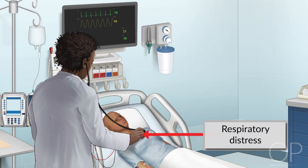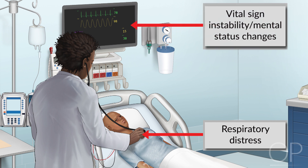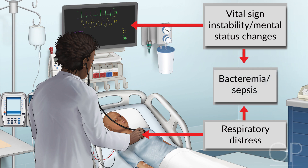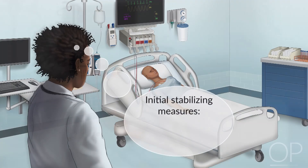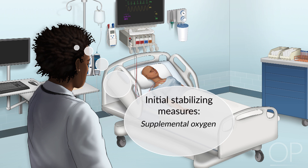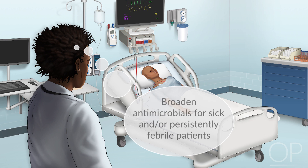Ongoing clinical assessment is important in ensuring that changes in a patient's clinical status are noted promptly. While many patients with febrile neutropenia have no localizing signs or symptoms and are managed sufficiently with empiric antibiotics, some patients may develop more concerning symptoms that warrant further interventions or more intensive monitoring. Patients with respiratory distress, vital sign instability, and/or mental status changes should raise concerns for bacteremia or sepsis and warrant consideration of an ICU evaluation, as well as notification of the on-call fellow. Don't forget initial stabilizing measures in a sick patient while awaiting help to arrive, such as supplemental oxygen as needed and fluid resuscitation. Sick and/or persistently febrile patients may also require broader antimicrobial coverage.